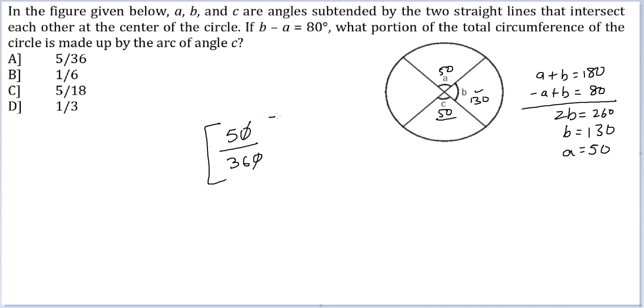Cancel to get the final ratio 5 by 36, which is option A.